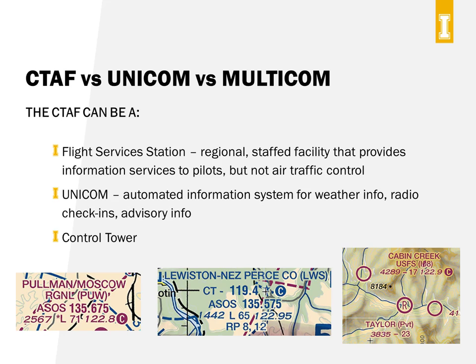The CTAF can be for any one of a number of different types of facilities that pilots are calling into, or there may be no CTAF listed at all. A CTAF can be a part-time, or in some cases even a full-time, tower. It can also be a flight service station, which is a staffed facility that provides information to pilots but doesn't give instructions or handle air traffic management. A CTAF can also be a UNICOM station. UNICOM is an automated system for weather, radio check-ins, and airport advisory information. Most non-towered airports now have a UNICOM station, and the standard frequency for that is 122.8 megahertz, but you should always check the sectional chart or the chart supplement to see what the actual frequency is.